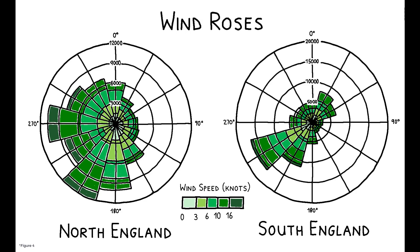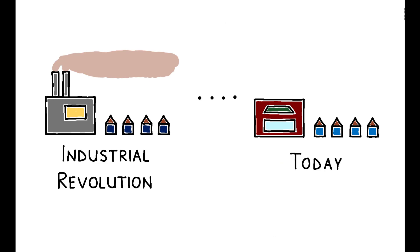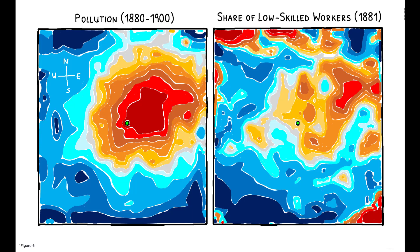Thus, the idea is to model the distribution of pollution emitted over the 1880-1900 period, and to investigate its short and long-run impact on affected neighborhoods. These figures provide an initial look. On the left is the estimated spatial gradient of pollution, averaged across cities, and with warmer colors indicating higher values. Relative to the city centroid, pollution is more concentrated to the east.